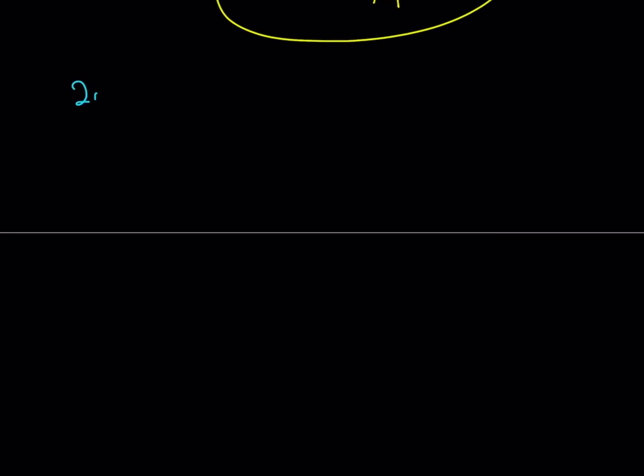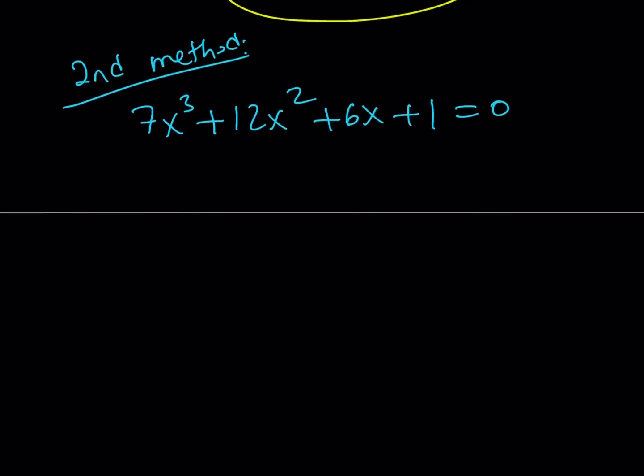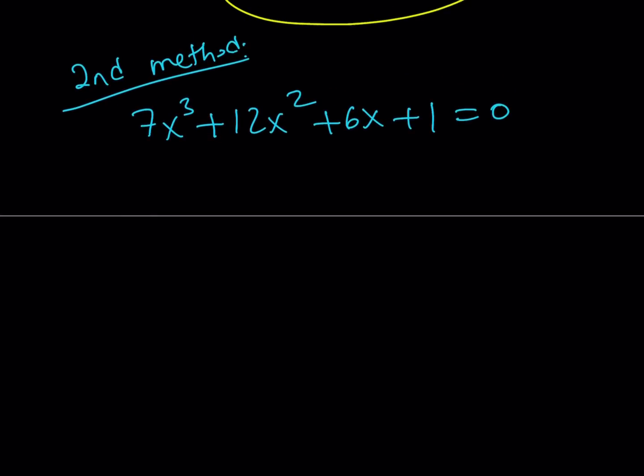Let's go ahead and proceed with the second method. All right. Hopefully, we'll get the same answer, right? We should be. So, my second method is very different. Yay. So, let me rewrite the equation. 7x cubed plus 12x squared. I think some of you guys have already thought about this method. I'm pretty sure you thought of it because you guys are so good and very mathematical. Anyways, when you look at this number, ignore the 7x cubed, but look at the 12 and the 6 and the 1. Does that ring a bell?